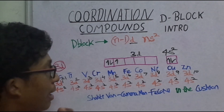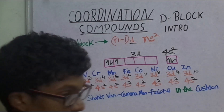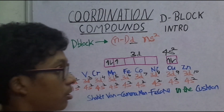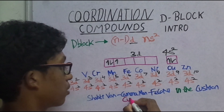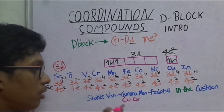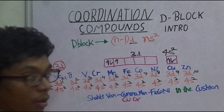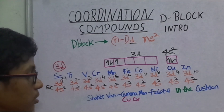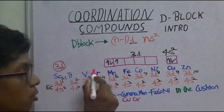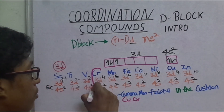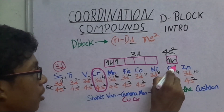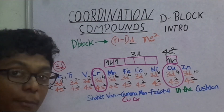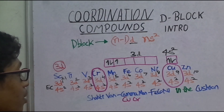In inorganic chemistry, there are exceptions. The exceptions are for Copper and Chromium — remember them as 'CrCu' or 'Cooker.' There is an exception in the configuration for both Chromium and Copper, so be aware of these two elements.